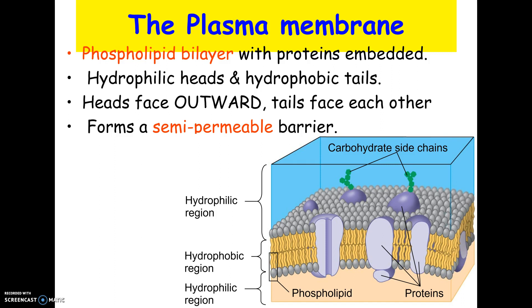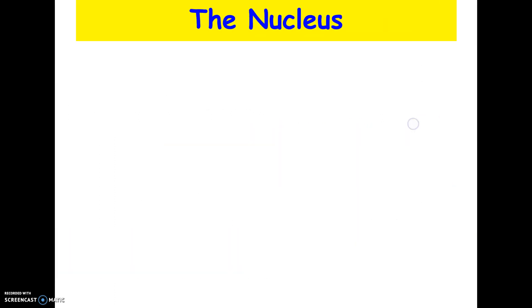Be careful on a test — you could have choices about which structure controls what enters and leaves the cell. One option might be cell wall, but that's not the answer. Cell walls — remember, animal cells don't even have them — are for protection and support, not controlling what enters and leaves. That's the job of the cell membrane.